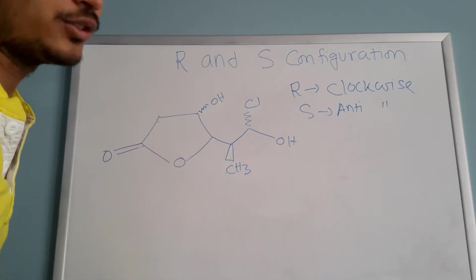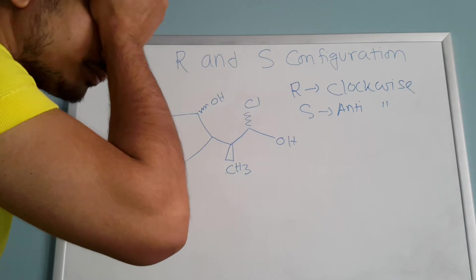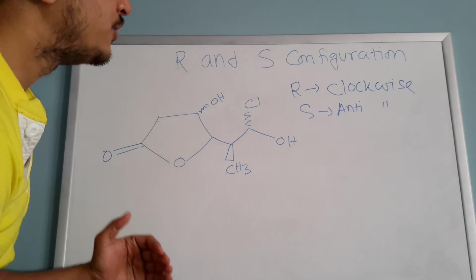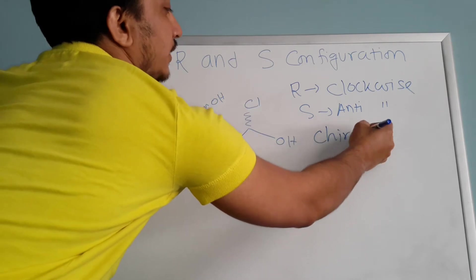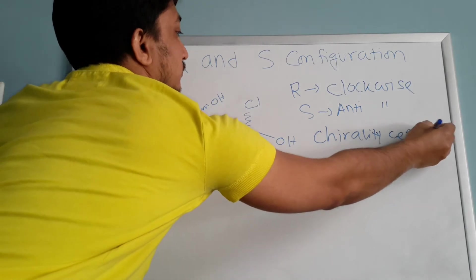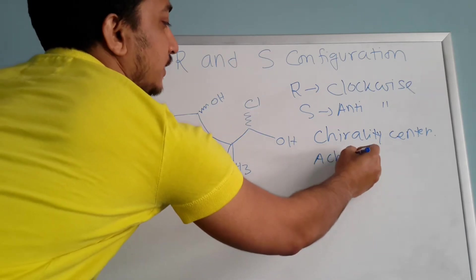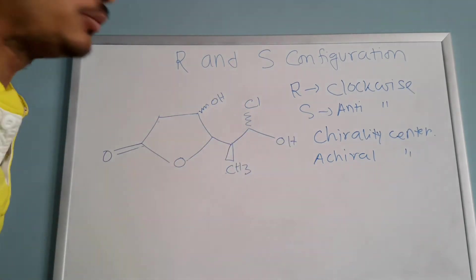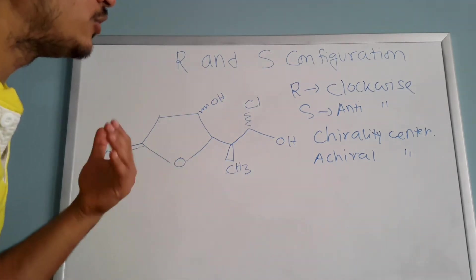When you're trying to find out R or S configuration, the simple thing you have to understand is that R and S configuration really depends on the chirality center. If there is a chirality center, then it is possible to have R or S configuration. If there is no chirality center, then you cannot have R or S configuration.